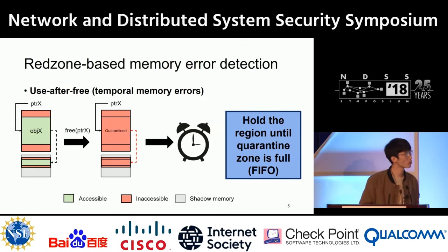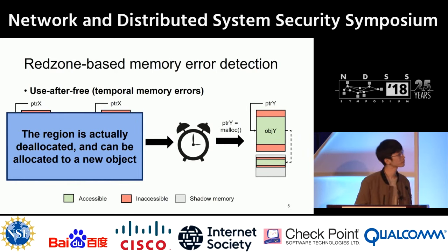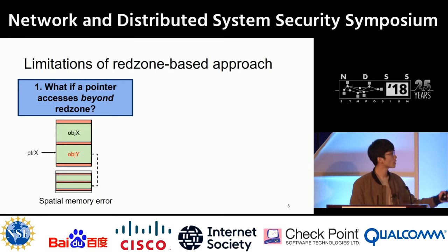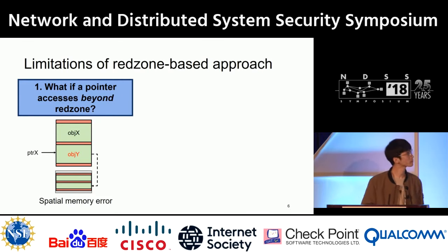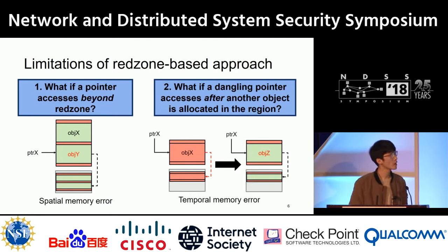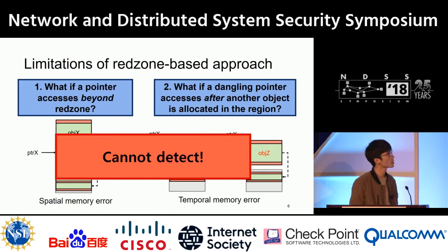The quarantine zone holds the region until it is full. After that, the region is actually deallocated and can be allocated to a new object. However, there are a couple of limitations. First, if a pointer accesses beyond the red zone, it cannot be detected because shadow memory is valid, causing spatial memory errors. Also, access from a dangling pointer can be detected for a while, but after a new object is allocated in the region, it cannot be detected, causing temporal memory errors.